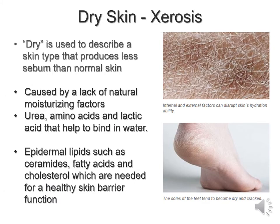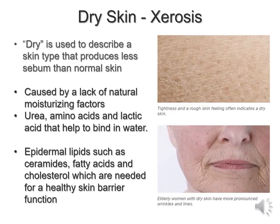Dry skin is also referred to as xerosis and it describes skin that produces less sebum than normal. It's caused by a lack of natural moisturising factors which include urea — not just a waste product but an essential factor in your body — amino acids and lactic acid, which help to bind water and keep your skin moist. Epidermal lipids such as ceramides, fatty acids and cholesterol are also needed as a skin barrier. As we get older we produce less sebum, and as a consequence may develop wrinkles and xerosis.